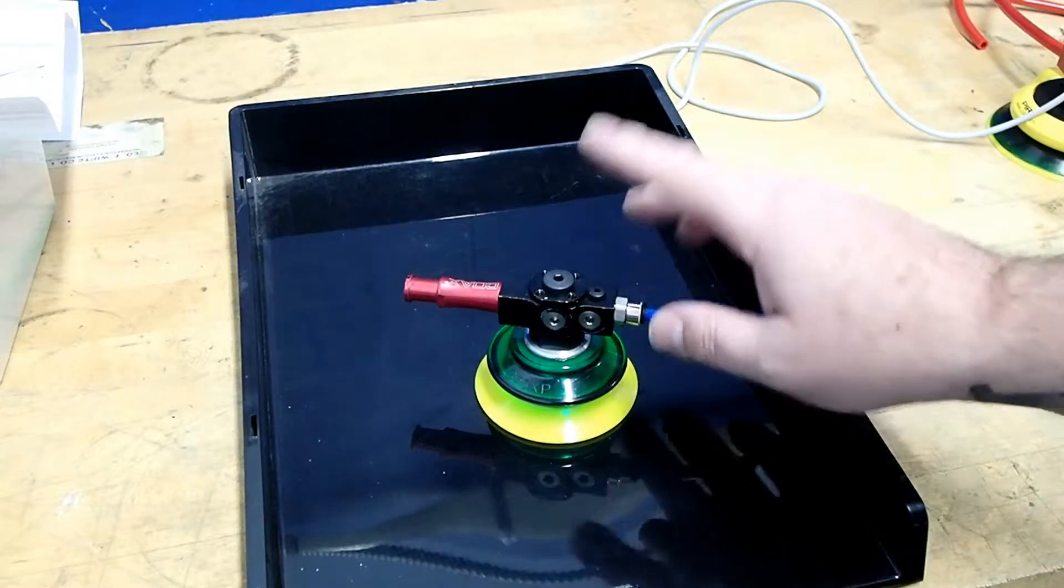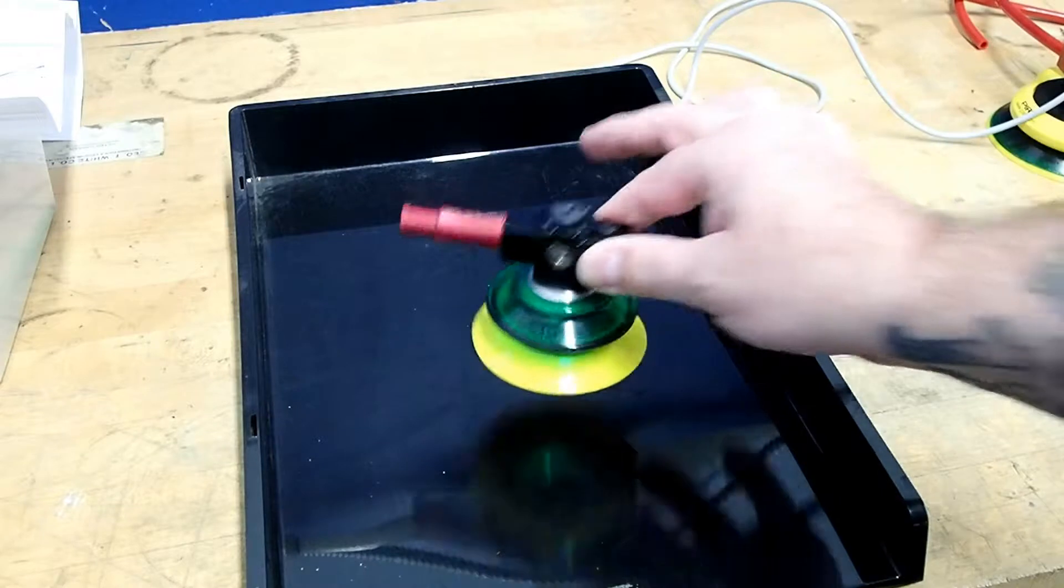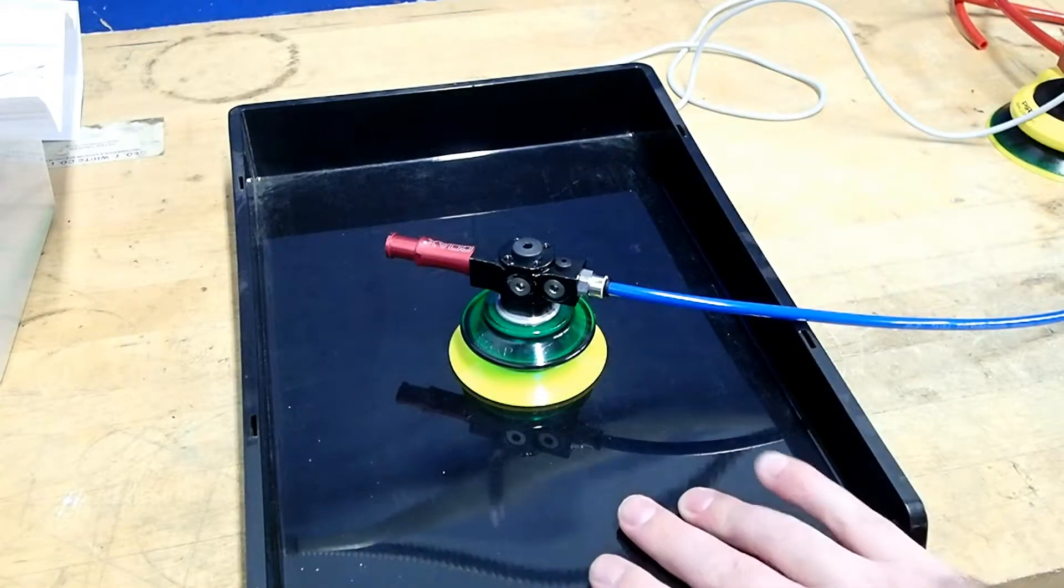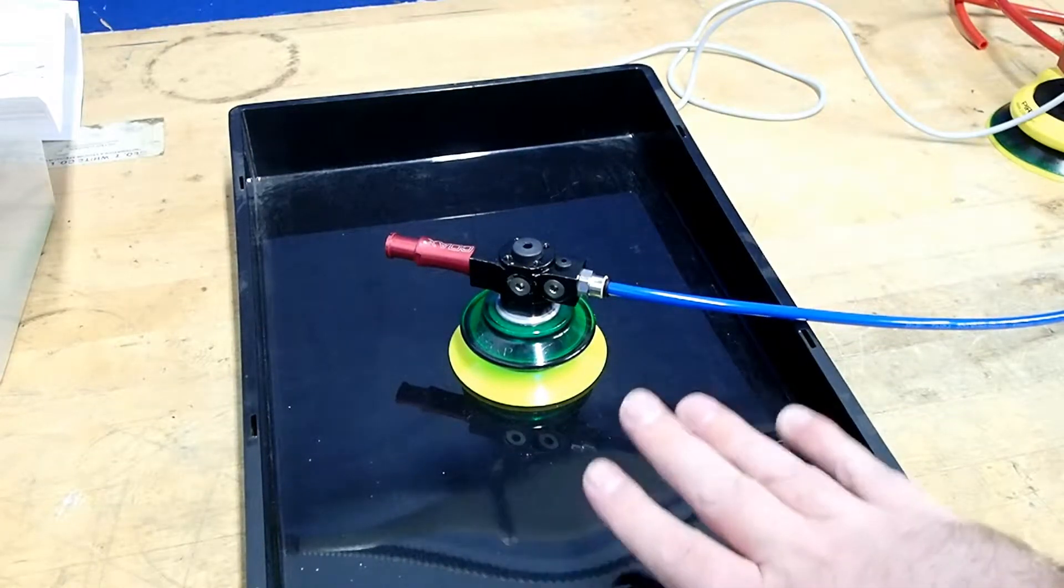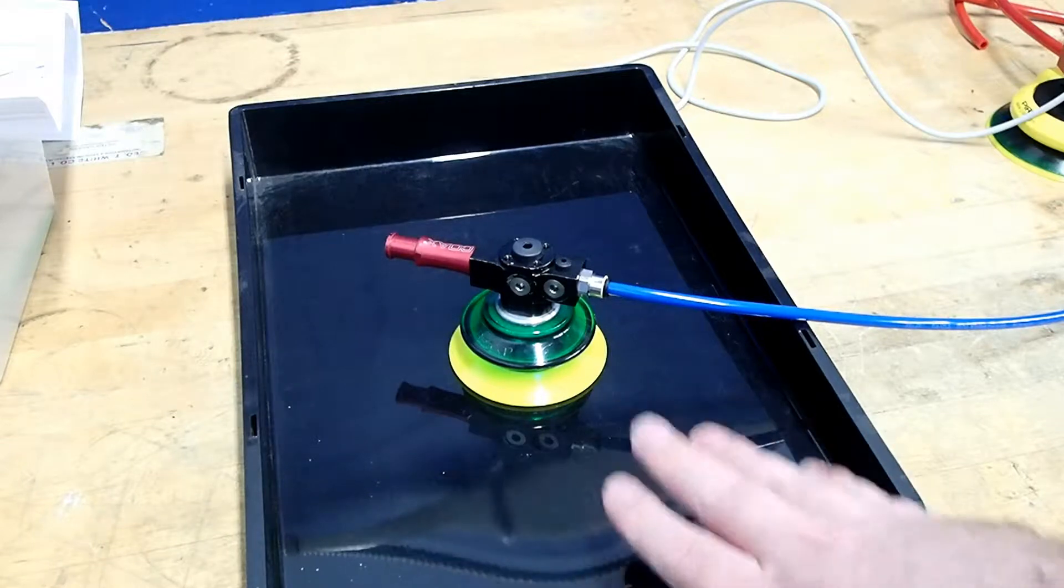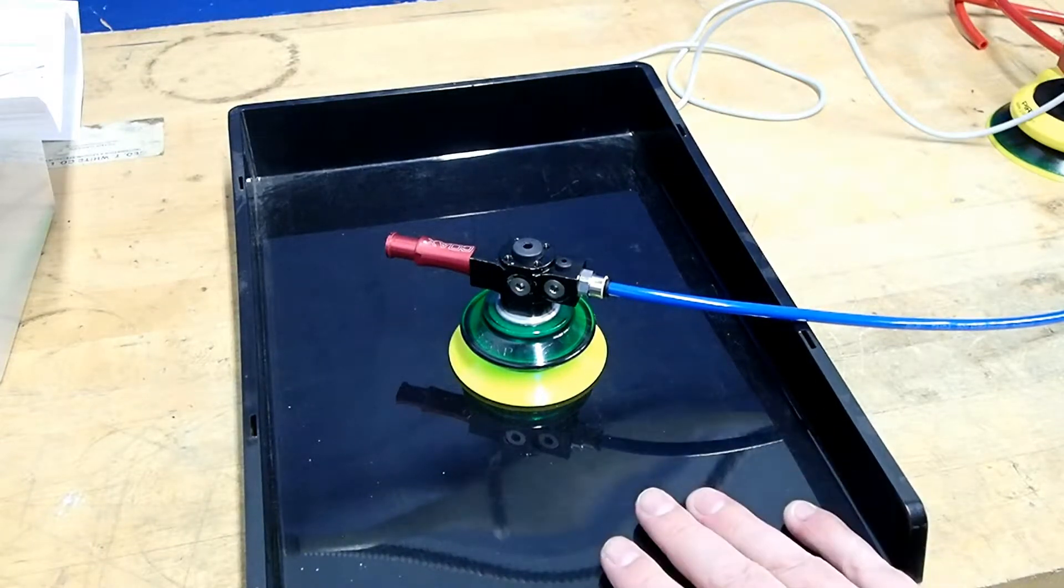So what we have right now is just a typical ejector and cup setup, and we're going to be using this plastic tray to define our airtight surface, be it glass, plastic, or sheet metal.